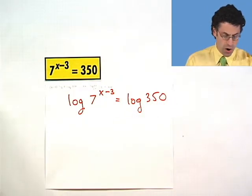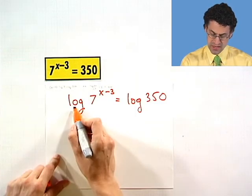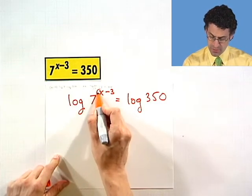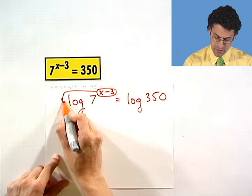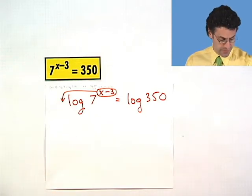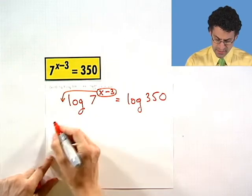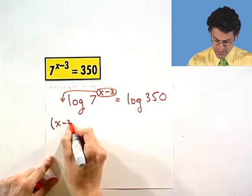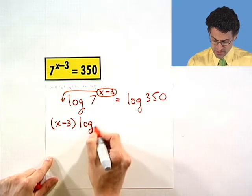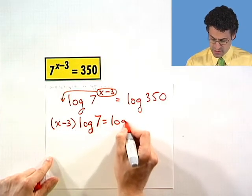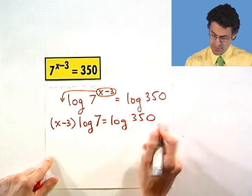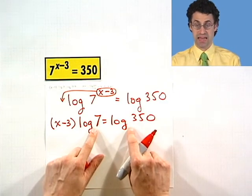And now I use this all important property of logs that a log of something to a power, that power can become a coefficient out in front. And so I see x minus 3 log 7 equals log 350. And again, remember those invisible logs mean base 10 everywhere.